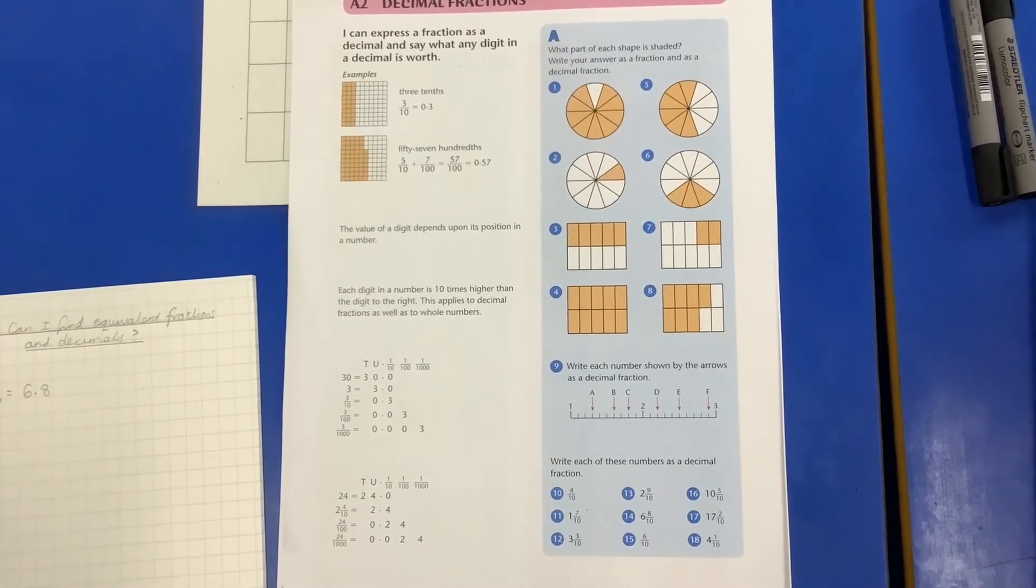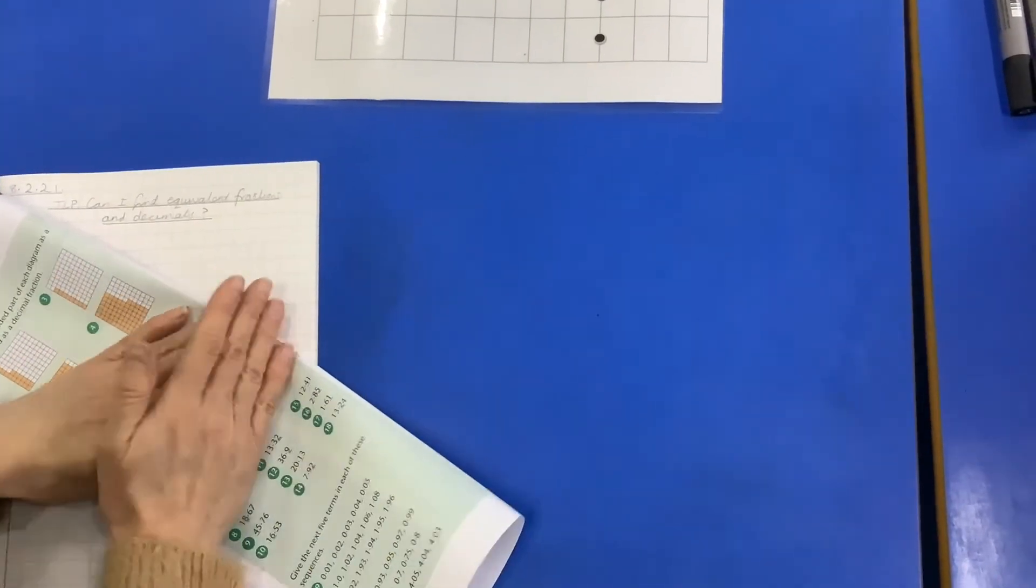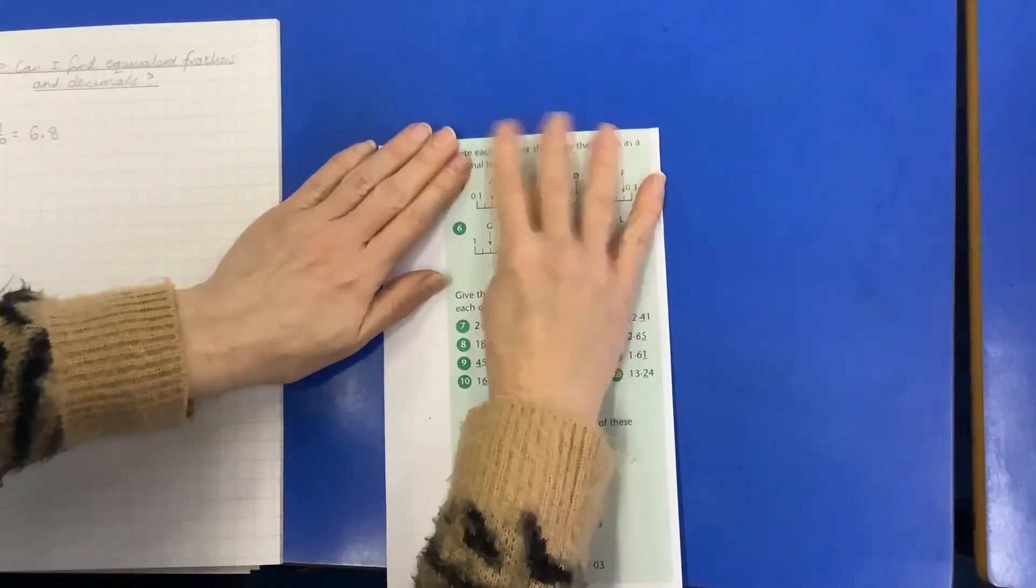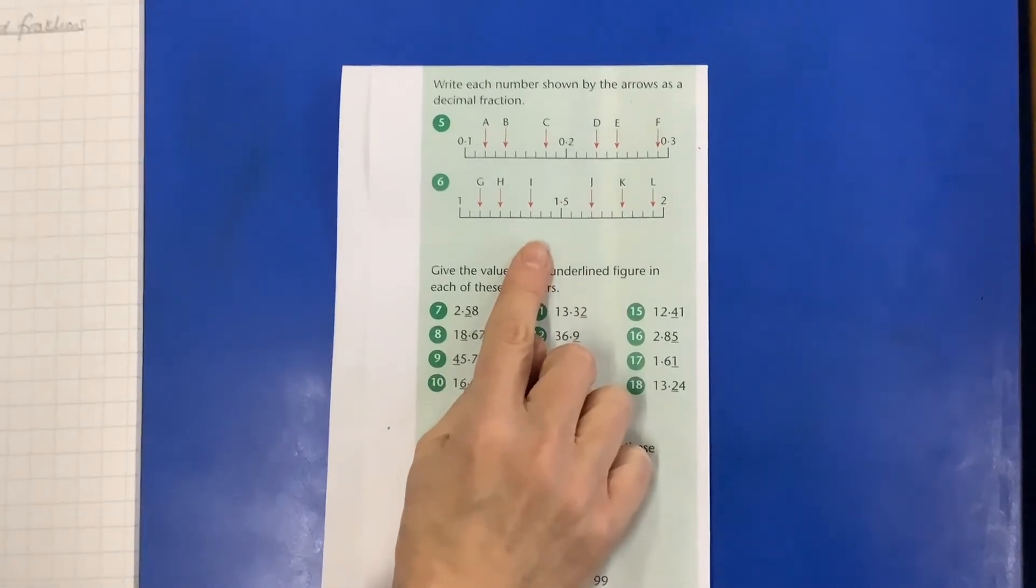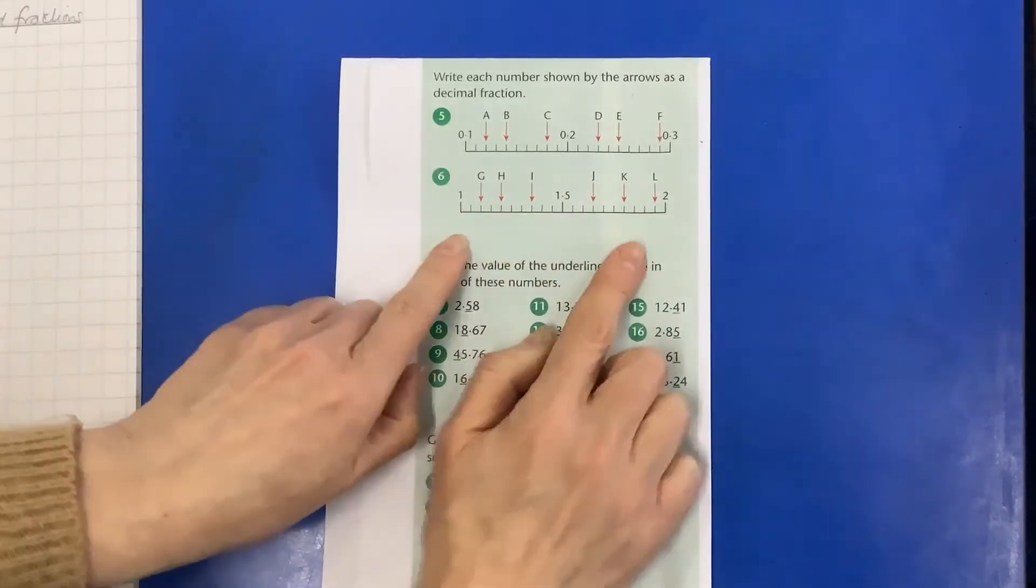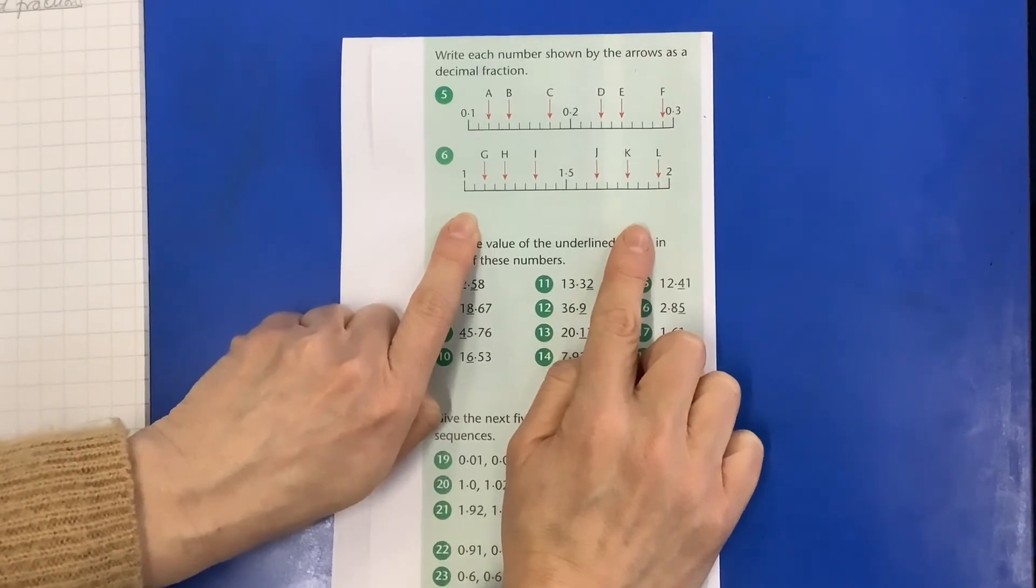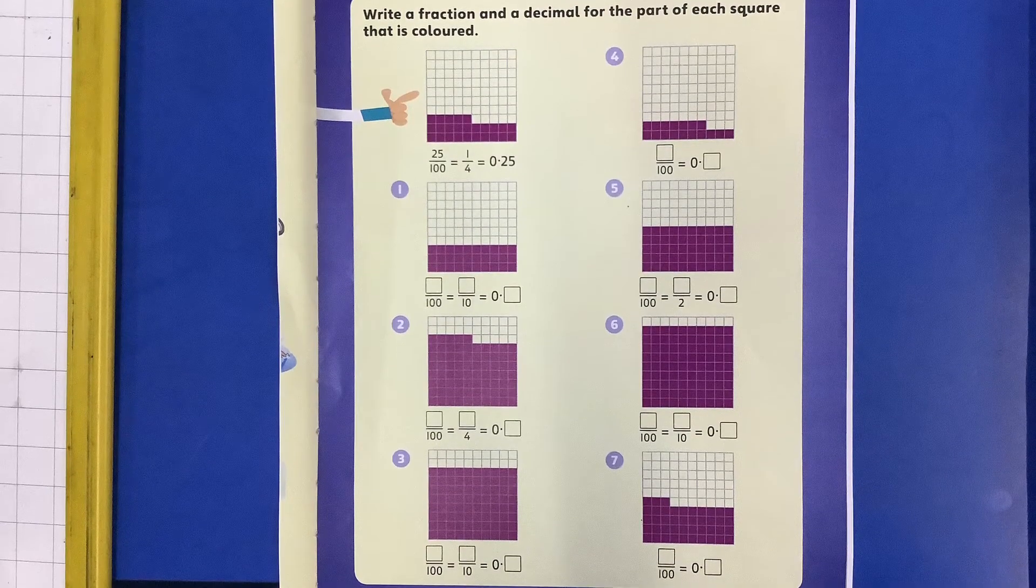And Year 6, if you really are feeling, and this will be for Mrs Stubbs' children, if you really are feeling very confident indeed, I would like you to have a go at these. Now this is getting on to two-place decimals. So I'd like you to have a go at this section here. You've already got a one-place decimal, this is going on to two-place decimals. So have a go at this if you really are feeling confident Year 6. Well done. Thank you.